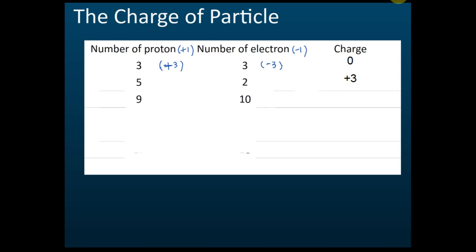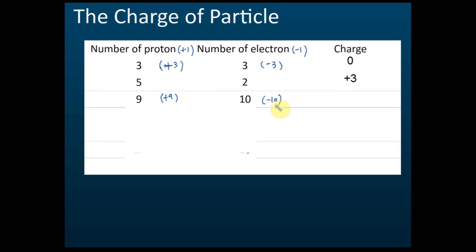How about this one: nine protons and ten electrons? The charge is negative one. It is negative because there are more electrons than protons — ten electrons but only nine protons. You can calculate it as: nine protons give positive nine, ten electrons give negative ten, and positive nine plus negative ten equals negative one.